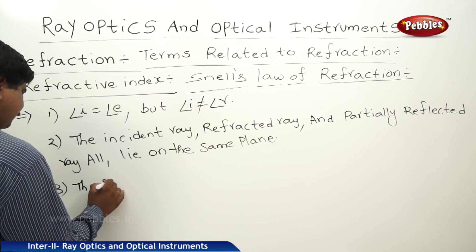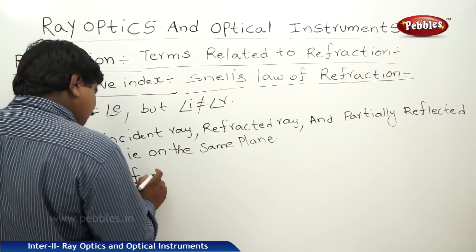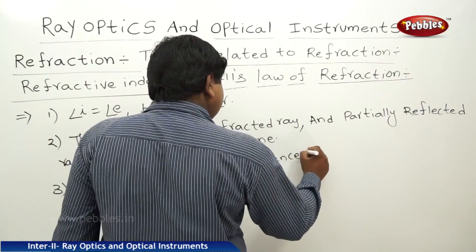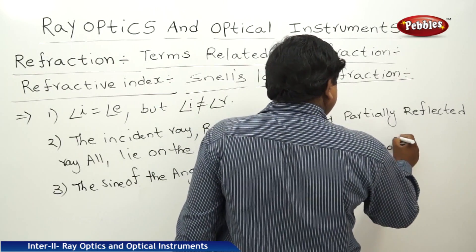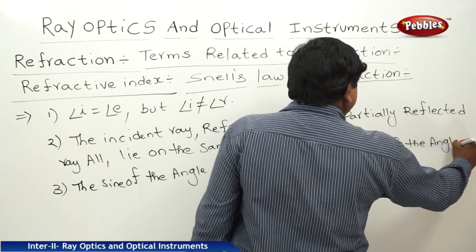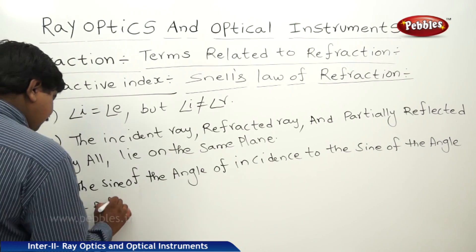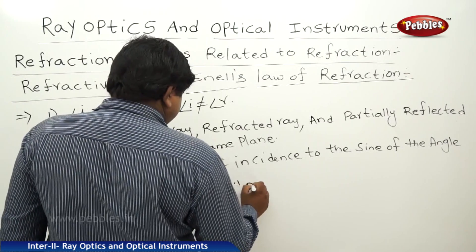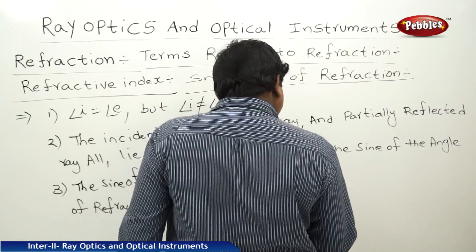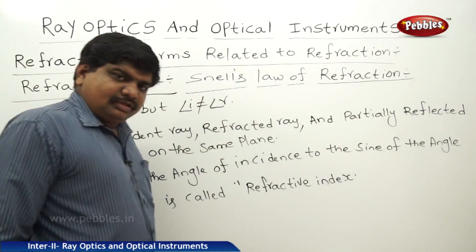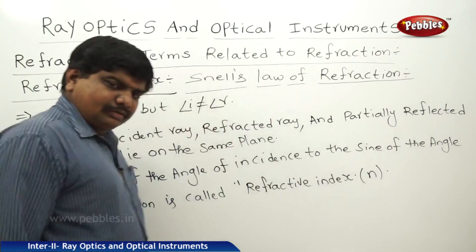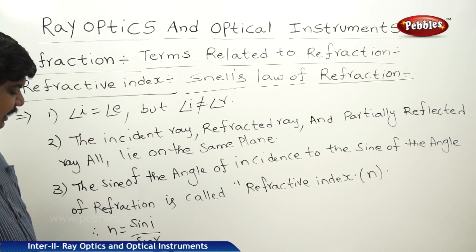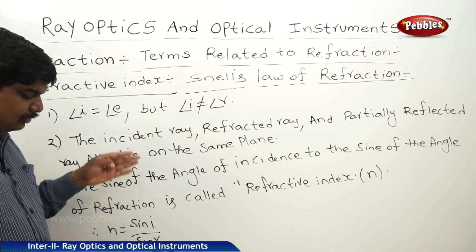The sine of the angle of incidence to the sine of the angle of refraction is called refractive index. This refractive index is represented by the symbol n. Therefore, n is equal to sine i divided by sine r. According to Snell's law of refraction, sine i by sine r equals n, which can take different forms.